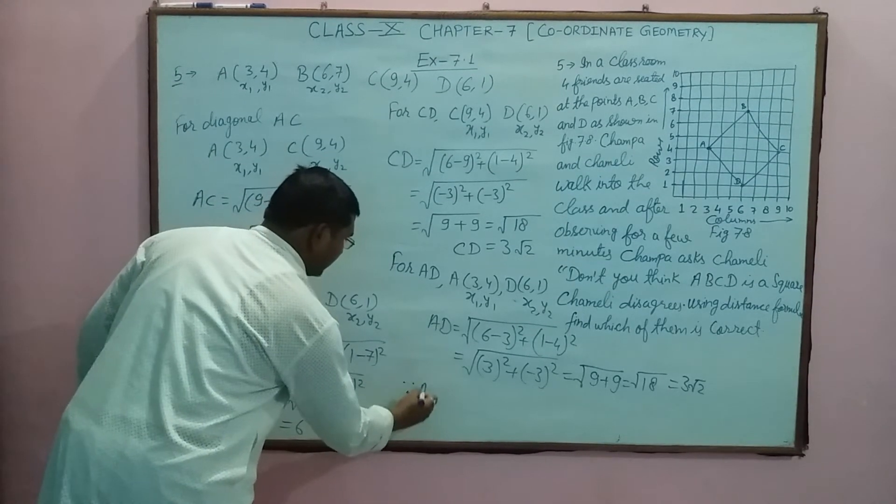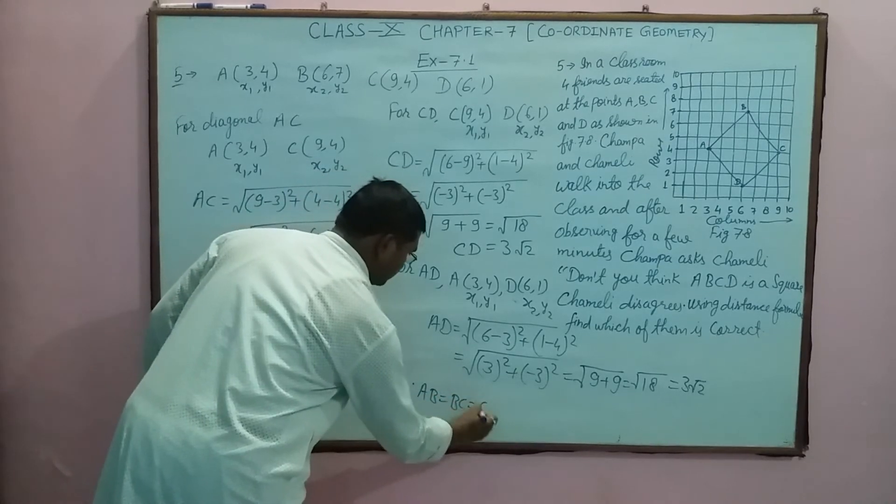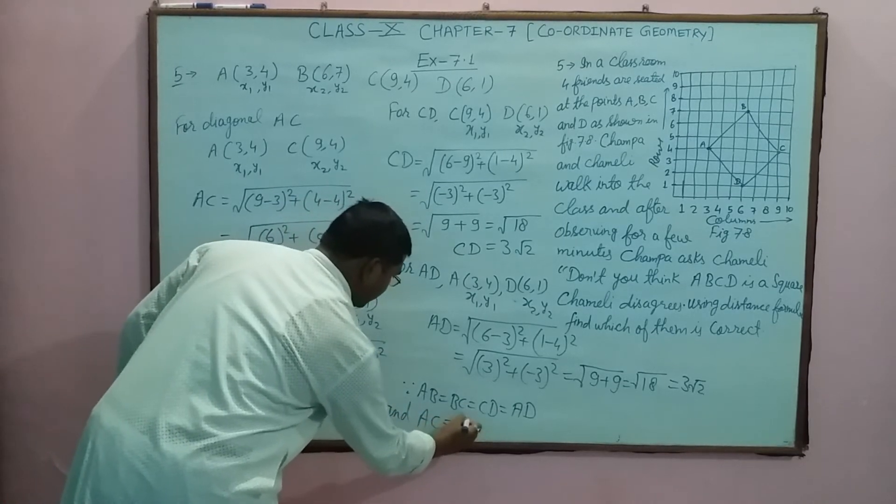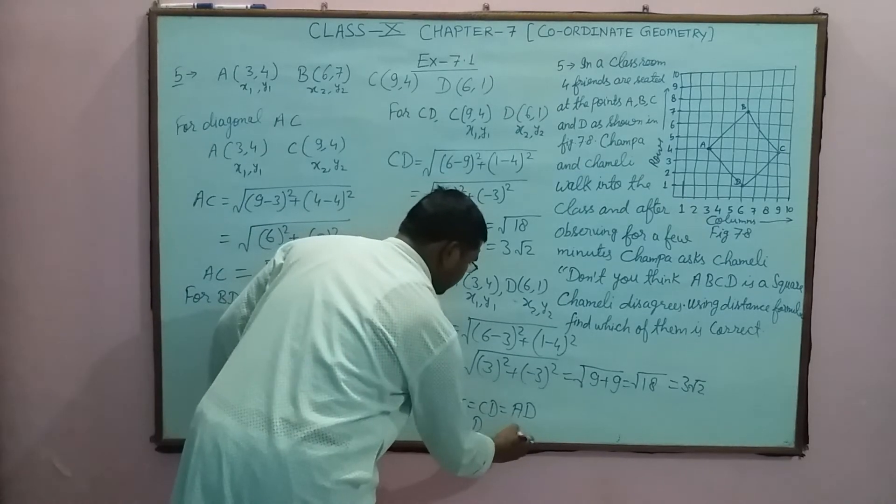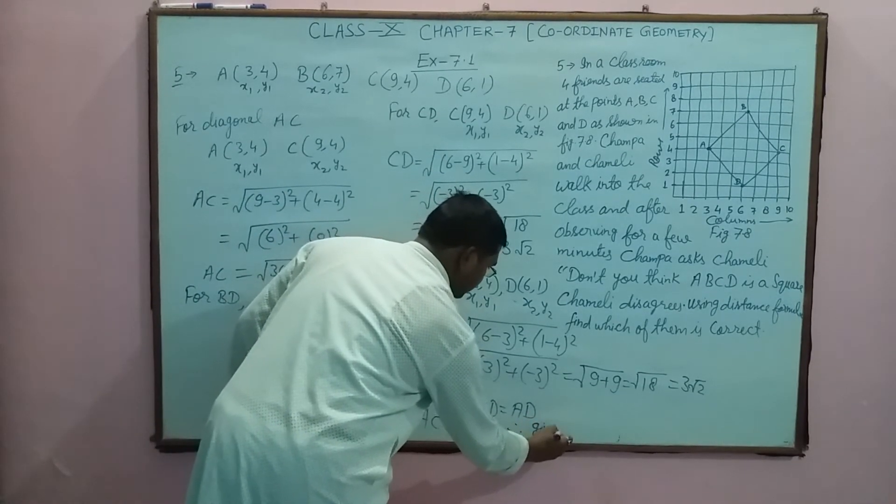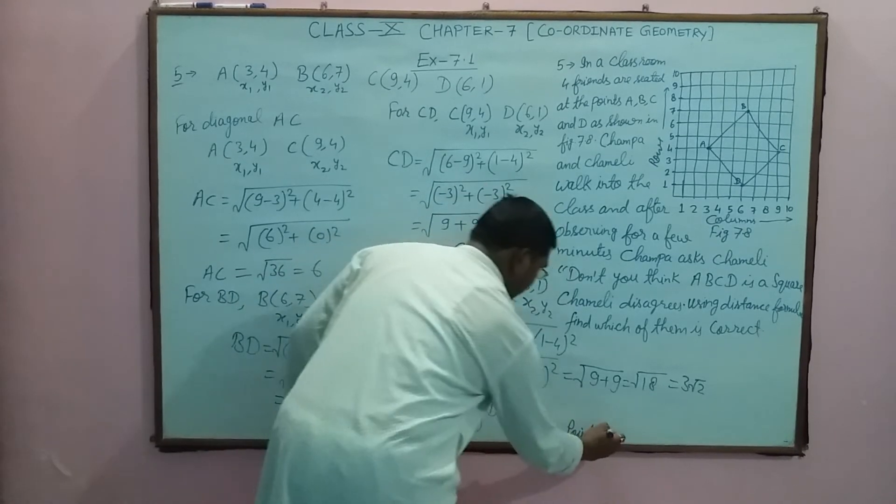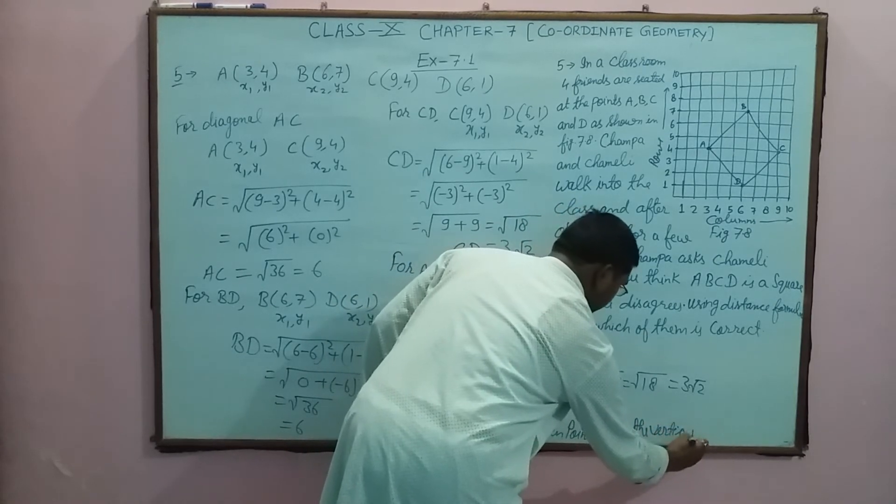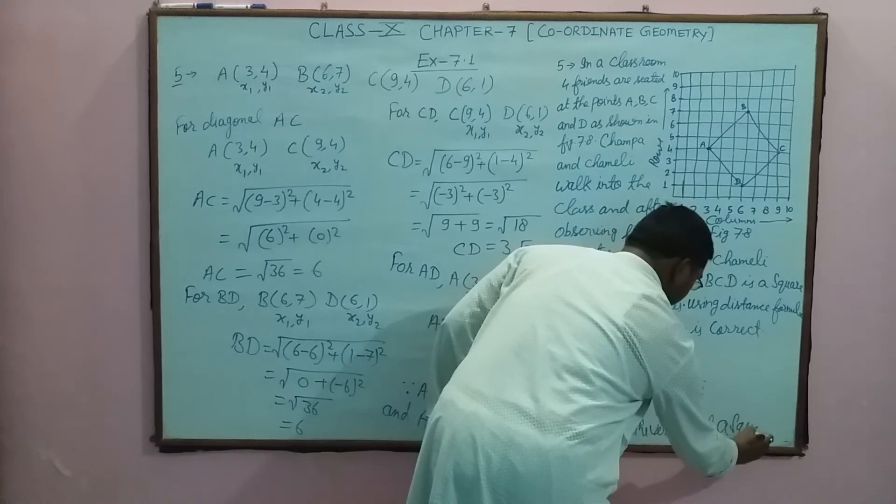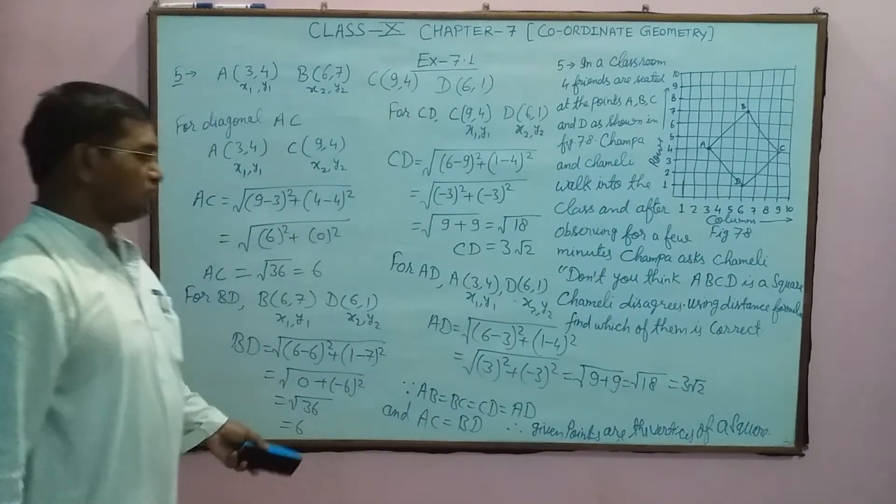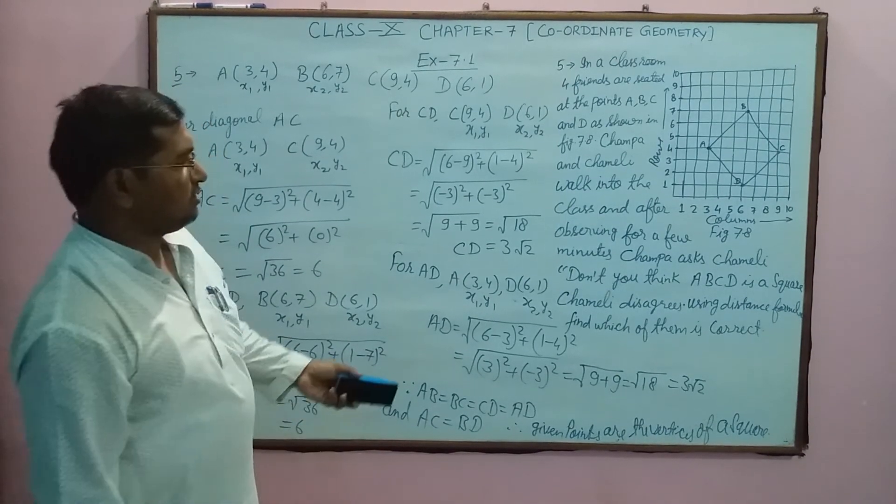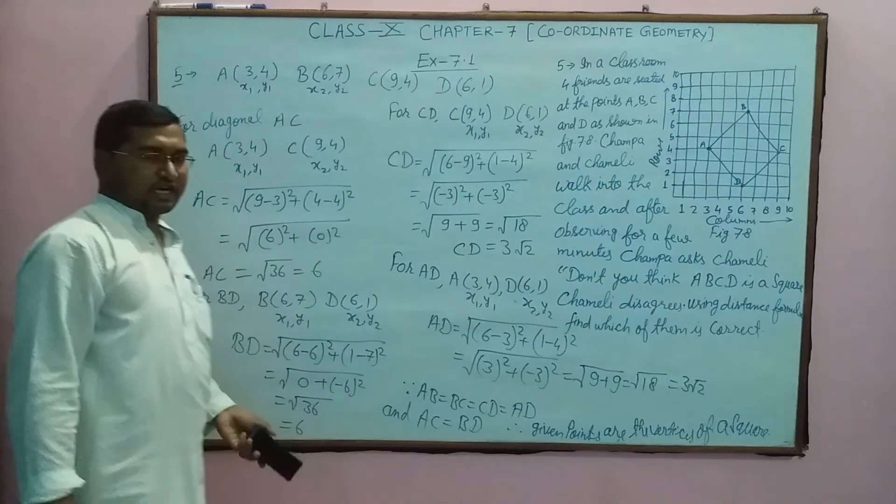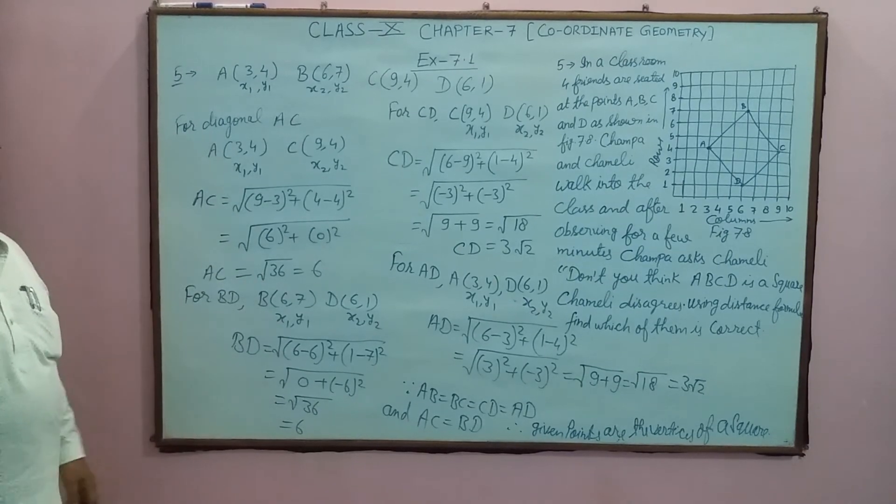So we will write here: since AB equals BC equals CD equals AD, and AC equals BD, therefore the given points are the vertices of a square. So it is a square. Champa asked, don't you think it is a square? Champa is correct.